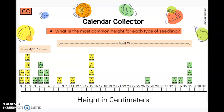Now I want you to think about the most common height for each type of seedling just for today, just for April 19th. Our April 12th numbers are from last time. What's the most common height for peas this time? Show a connection if you were thinking 36 centimeters. If you're noticing that there are 1, 2, 3 pea seedlings that measure at 36 centimeters, that's more than the other three measurements — that's good thinking.